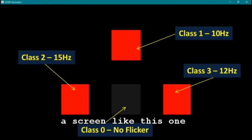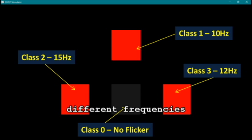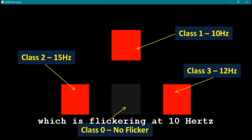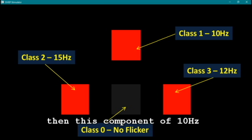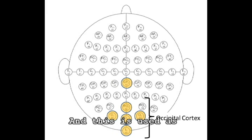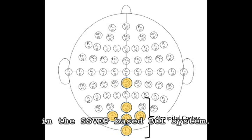Suppose you are viewing a screen like this one with boxes flickering at different frequencies. Then let's say you are viewing the topmost box which is flickering at 10 Hz. Then this component of 10 Hz will reflect in the EEG signal recorded from the occipital cortex. And this is used as the feature for the detection problem in the SSVEP based BCI system.